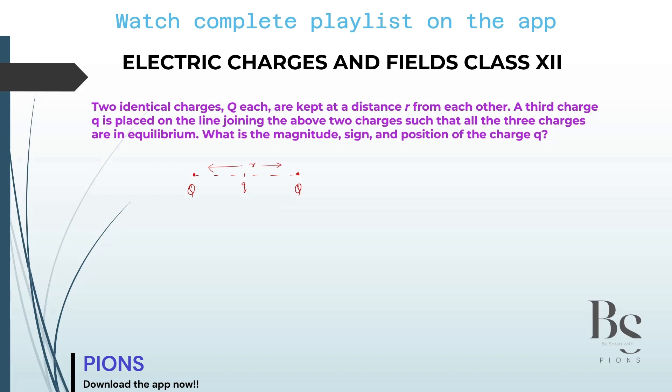Force between the two Q's, capital Q's, when there was no small q, they were stable. That must be equal to the force when you place small q here. It has to be equal. If it is equal, then only the system will be in equilibrium.